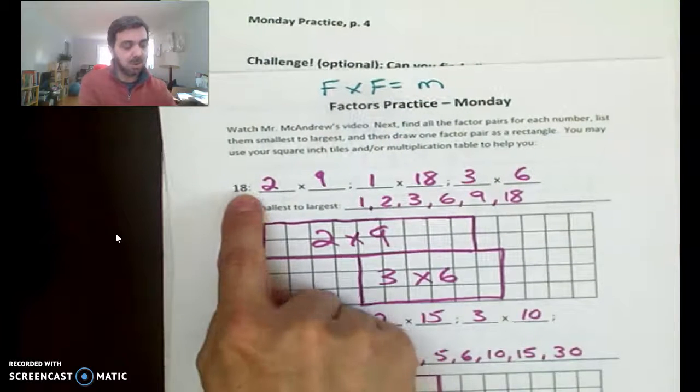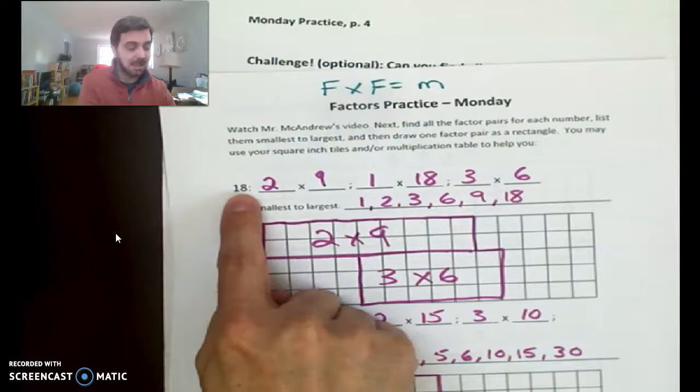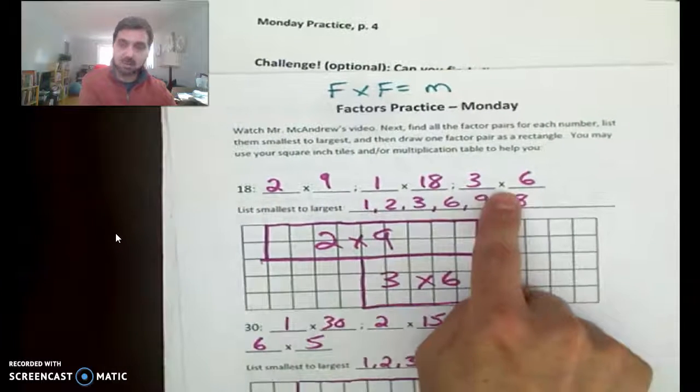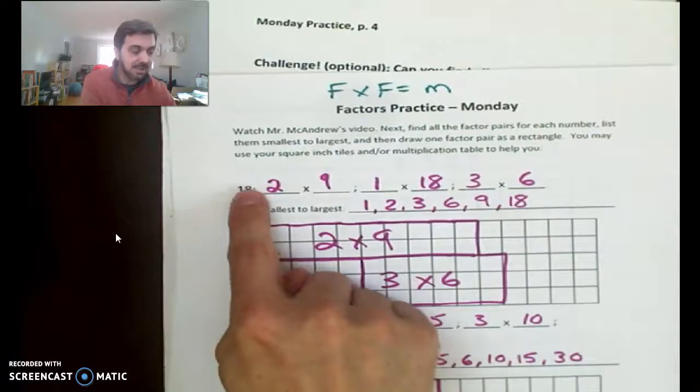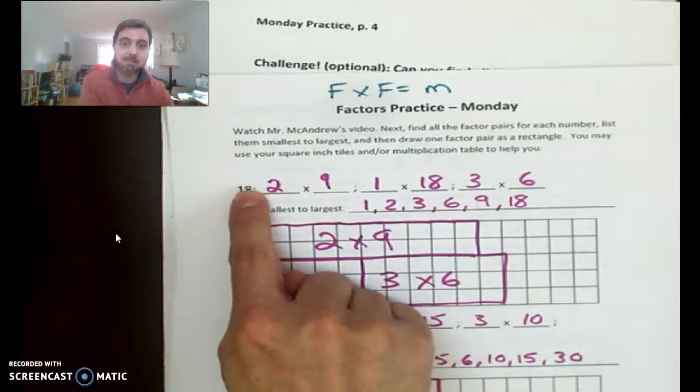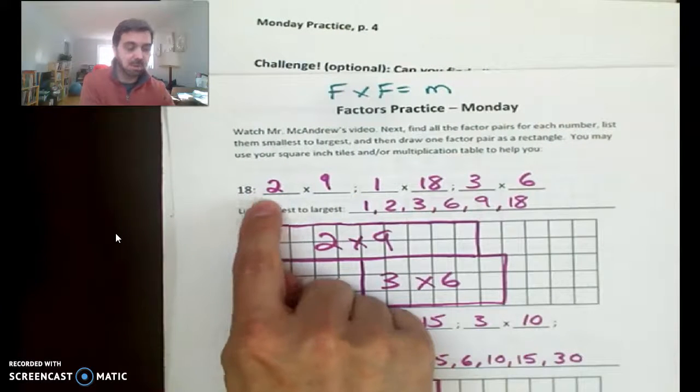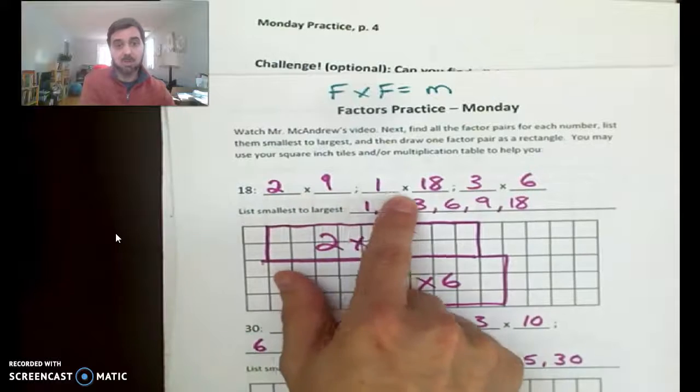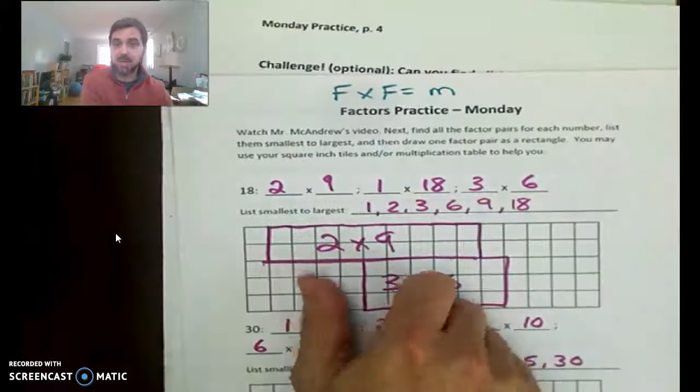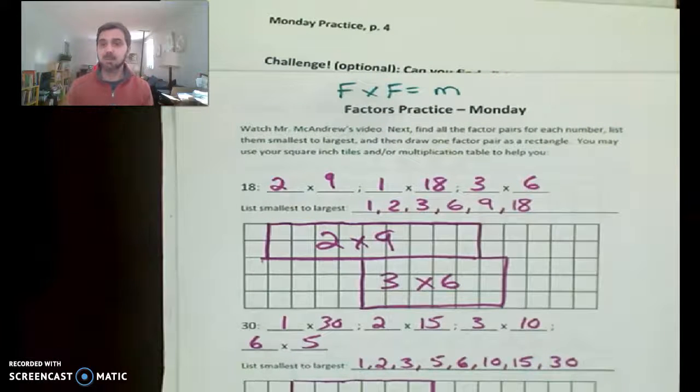So if you look at 18, for example, 18 is a multiple of all of its factors. Okay. So these are all the factors of 18 and 18 is a multiple of all these factors. Okay. So 18 is a multiple of two. It's a multiple of nine. It's a multiple of one, 18, three, and six. Okay. We'll talk more about it. All right. See you soon. Bye-bye.